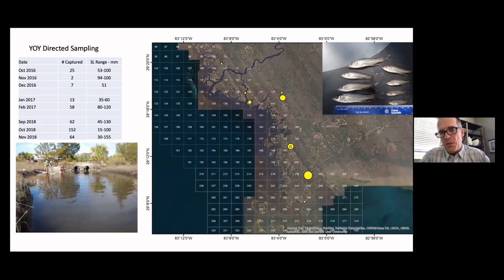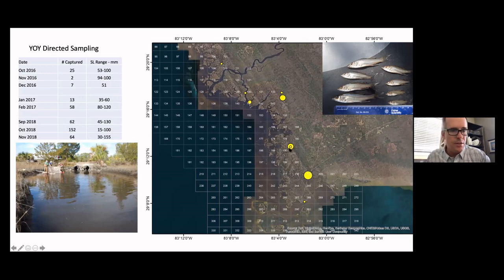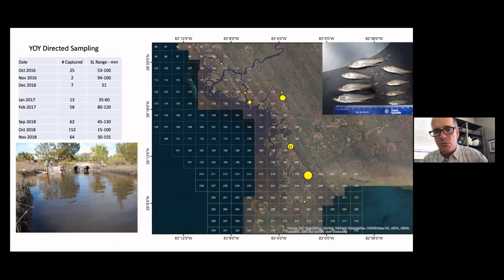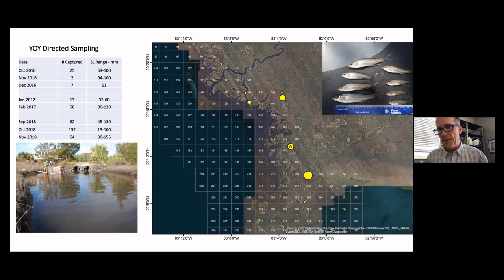Juvenile snook really use inshore marshes. The adults spawn out in the estuary and larvae are transported by currents back into the marsh. The juvenile snook really like the shallow, muddy, marshy habitat back in protected salt marsh areas, and we're continuing to identify those areas as well.